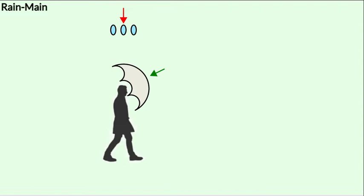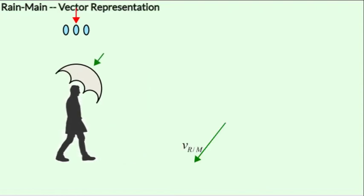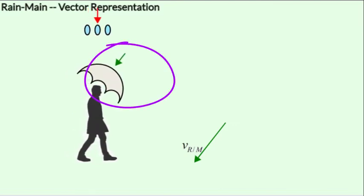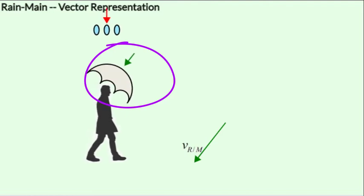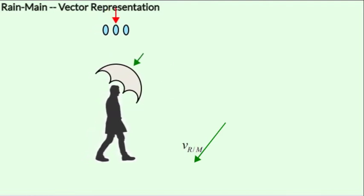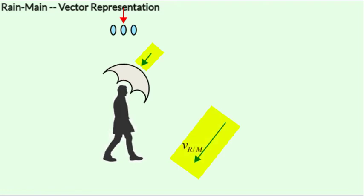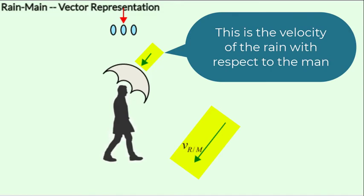Let's draw the vector diagram for this, and then the concept would begin to get more clear. Let's take the case where the man is in motion, and the man holds the umbrella at an angle which he perceives as the angle at which the rain is approaching him. And this happens only because he is in motion. Meanwhile, the rain continues falling vertically downwards. The angle at which he holds the umbrella is represented by the direction of the vector vr with respect to m, which is the velocity of the rain with respect to the moving man.